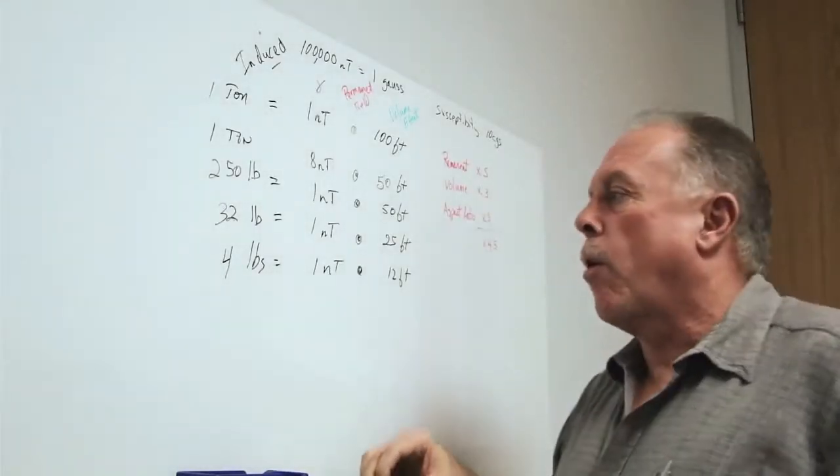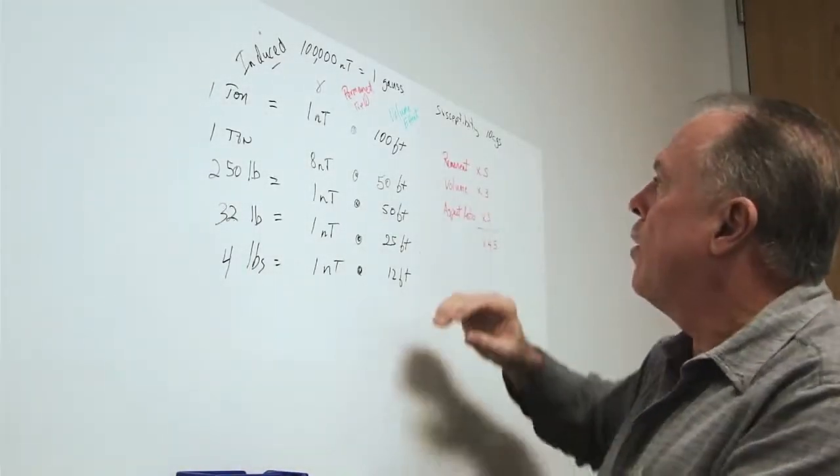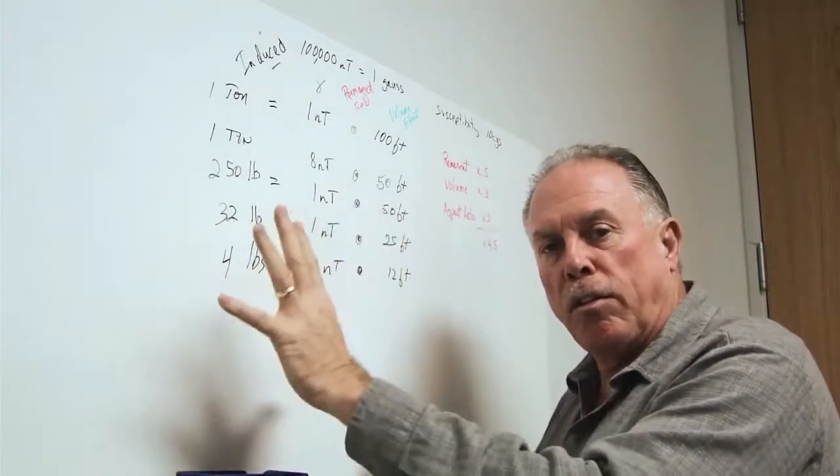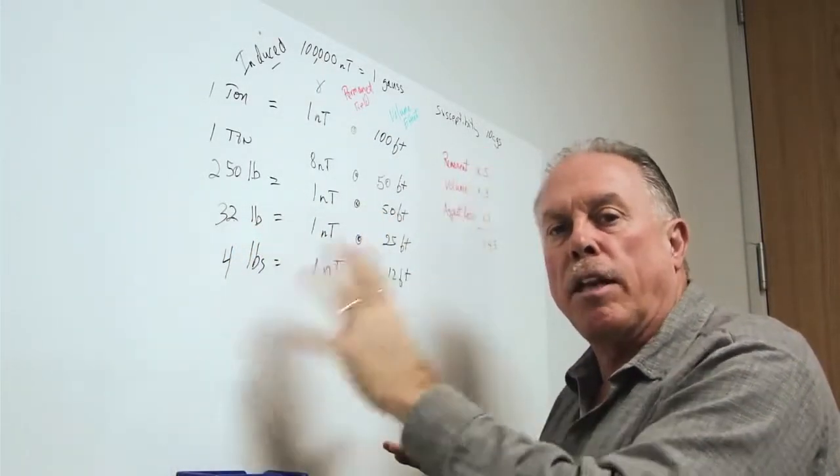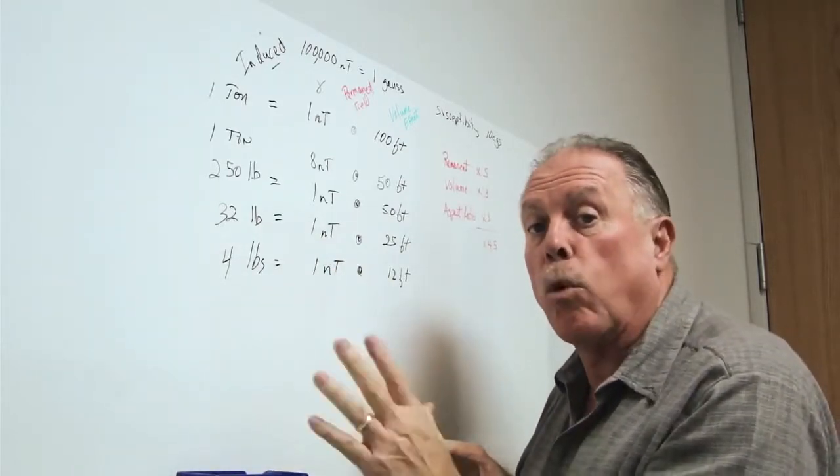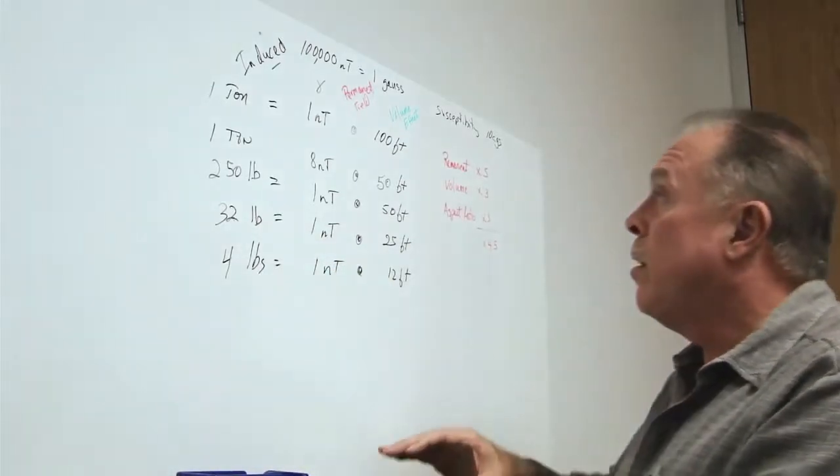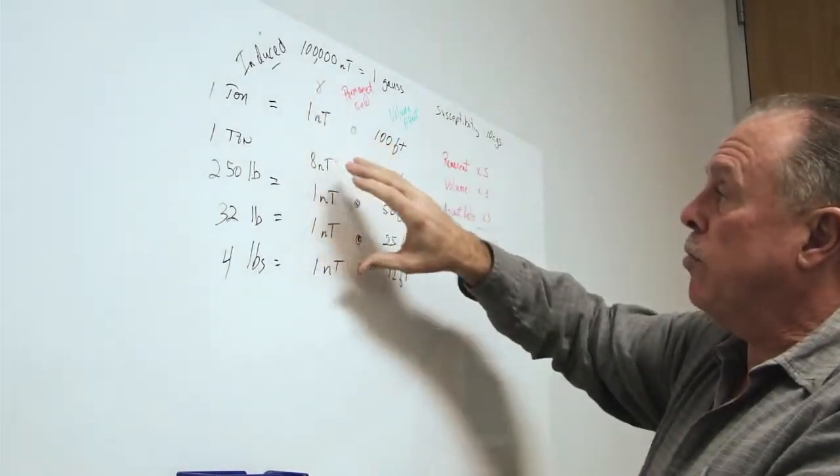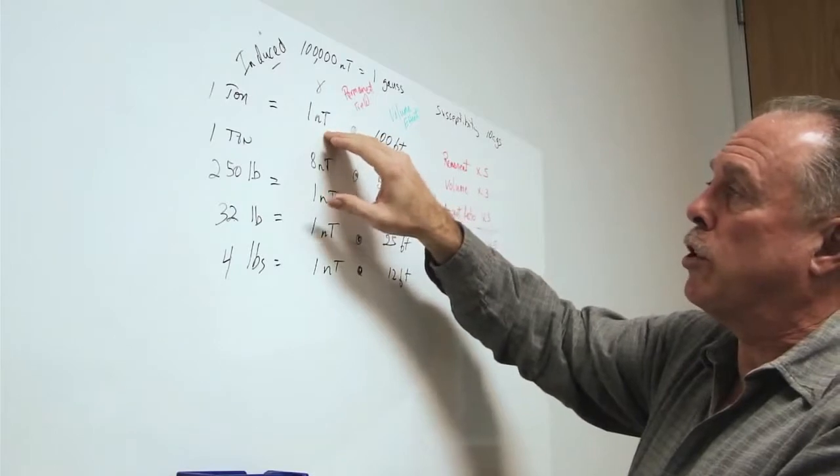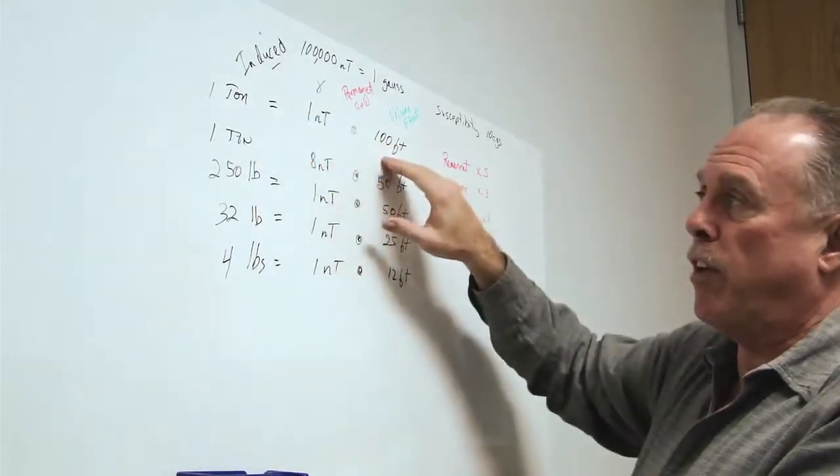Okay, so we have seen that we have induced magnetic field distortions of the Earth's magnetic field that give us the ability to see small objects at great distances with a total field magnetometer.